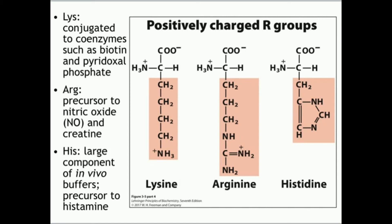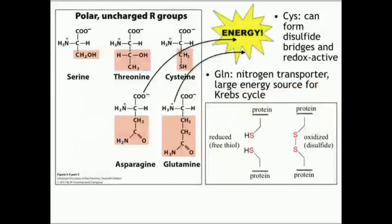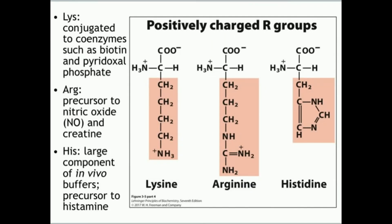These are more polar amino acids, but this group is charged — specifically positively charged. These three are lysine, arginine, and histidine. Lysine has a long carbon chain arm that terminates in an amine, and that amine can be conjugated to different coenzymes — particularly biotin and pyridoxal phosphate — allowing those coenzymes to perform various metabolic functions when lysine is part of an enzyme.